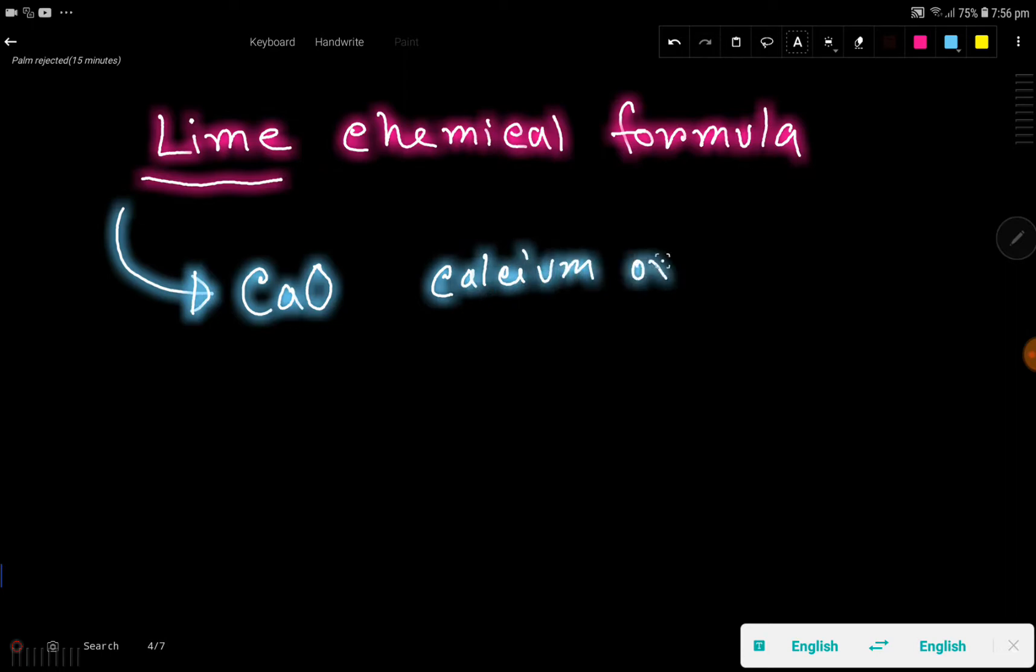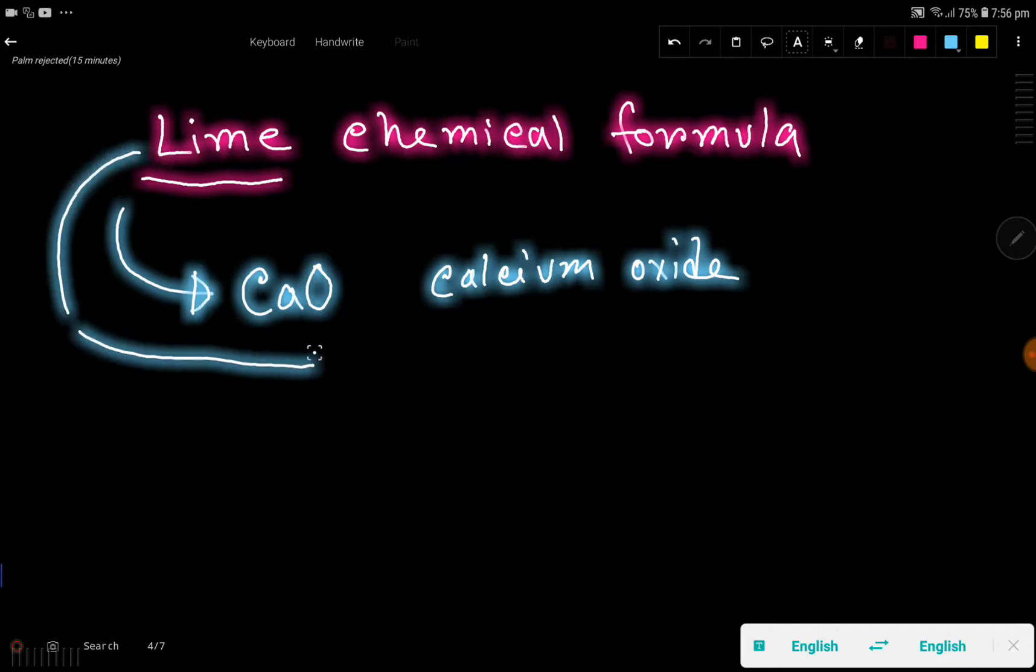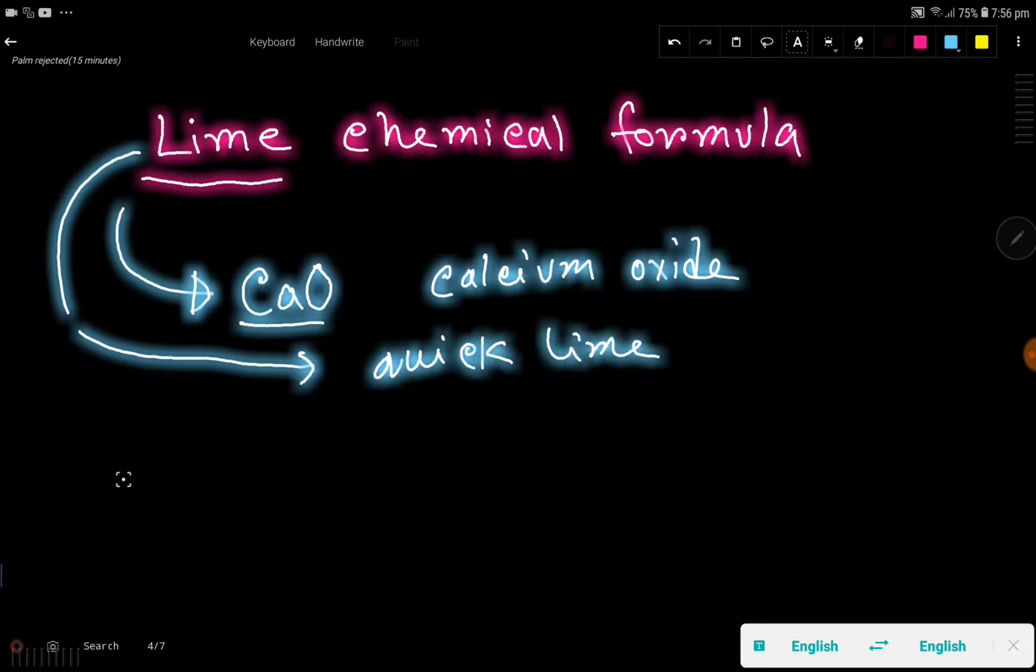Calcium oxide, the alternative name of calcium oxide is quick lime. We get this lime or quick lime. The alternative name of lime is quick lime.